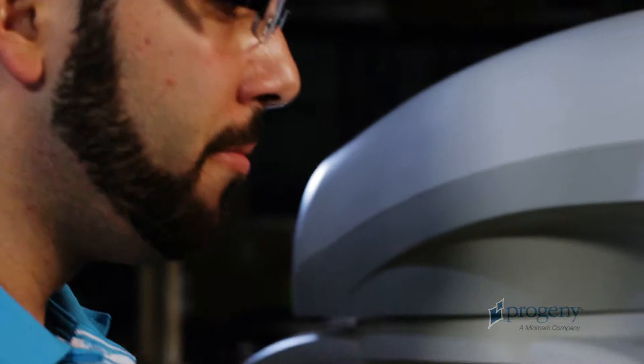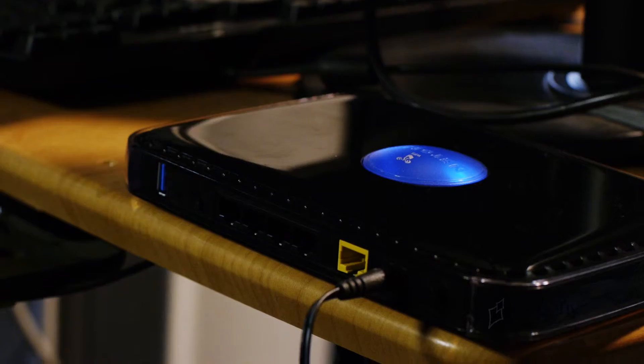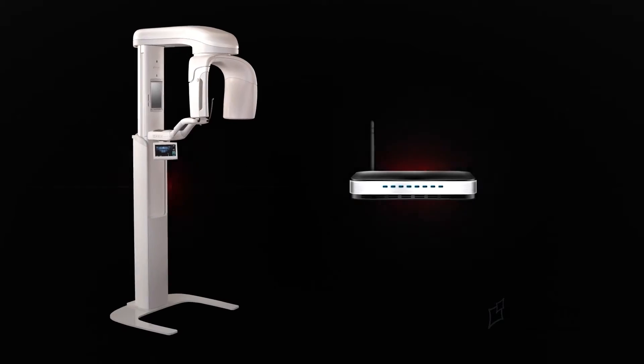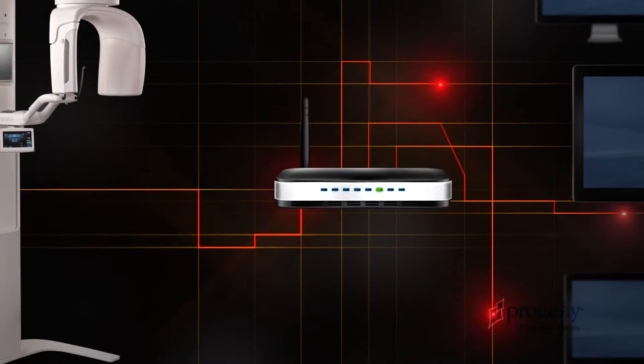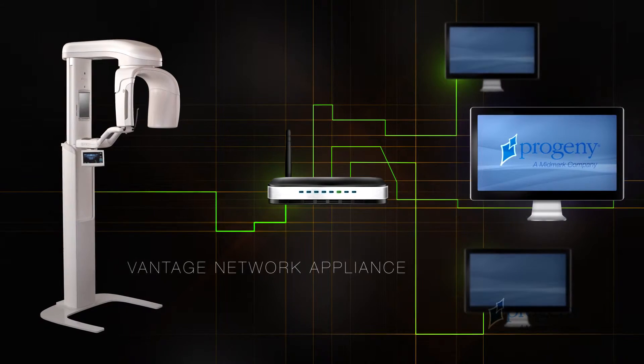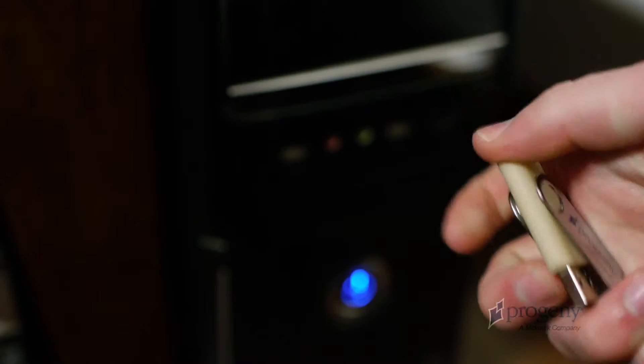To begin setup of the Vantage with its host workstation, connect the Vantage to your wired Ethernet network using the included Ethernet CAT5 cable. The Vantage acts as a network appliance that connects directly to your network. In order to receive X-ray images, you must designate at least one workstation on your network to receive the images. Plug in the included USB drive.